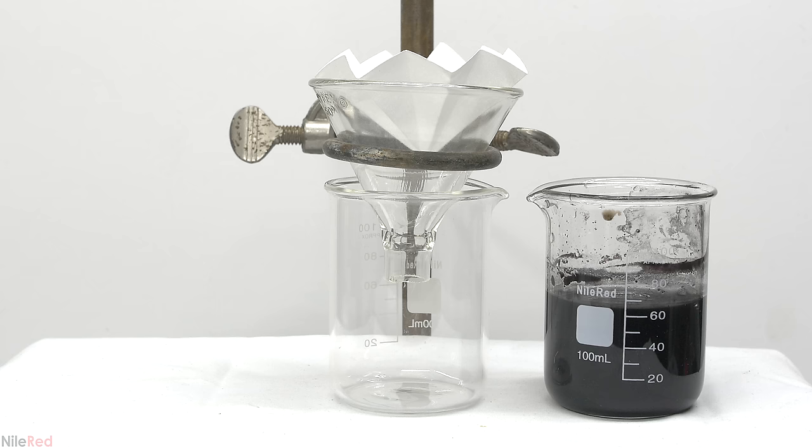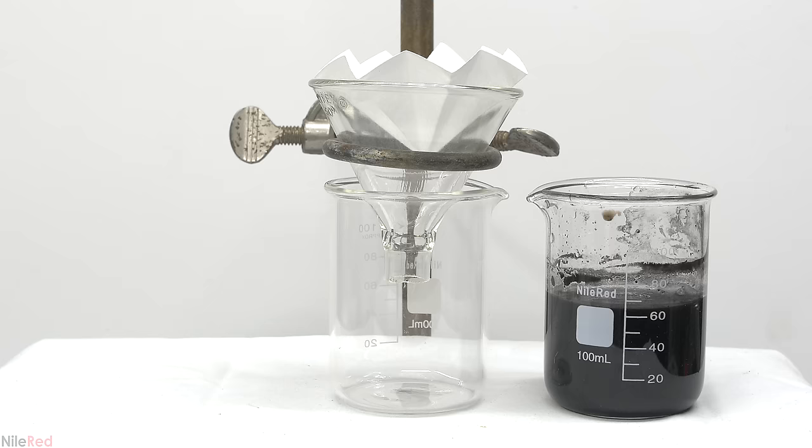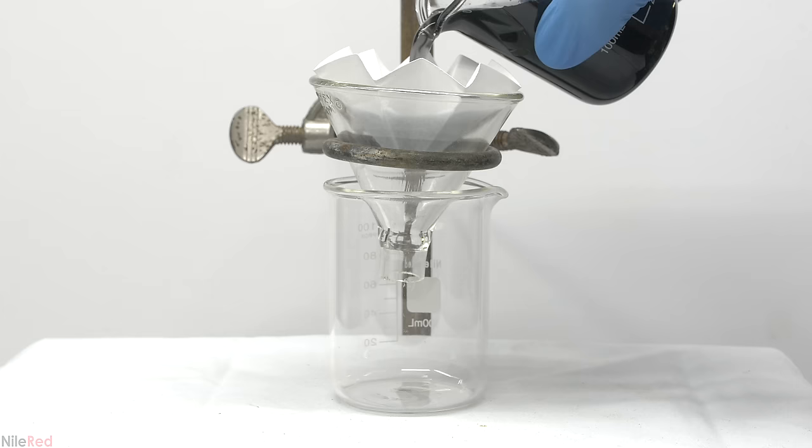I then make a small gravity filtration setup to separate off the carbon. All of the p-aminophenol should be contained in the liquid that's filtered through. I decided to use a gravity filtration here but it's also possible and actually recommended to do a vacuum one.